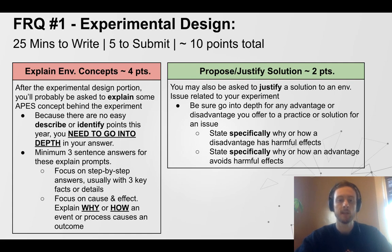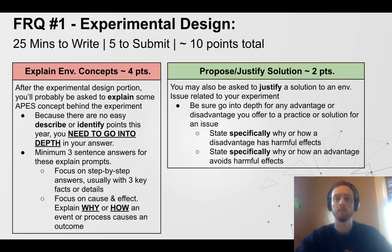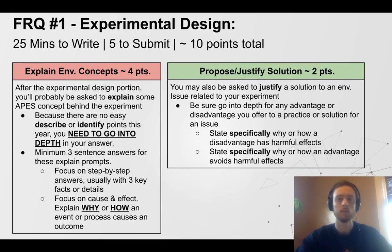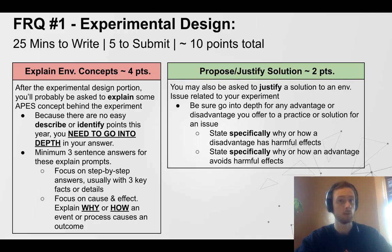When you explain something, there are usually three key details that should be part of your answer. Focus on the how and the why — focus on the cause and the effect. Walk the reader through the process you're describing step by step, starting at the beginning with whatever process or phenomenon is responsible for your answer. If you're writing fewer than three sentences for an explain prompt, you're cutting it close. Push yourself toward three fully developed sentences for explain prompts.